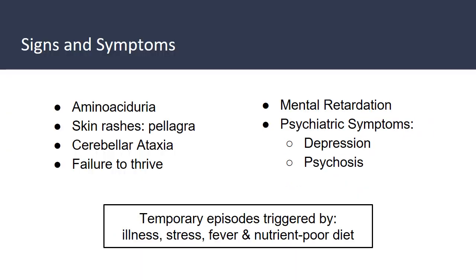Patients with Hartnup disease cannot absorb certain amino acids properly. This impedes the body's ability to produce protein and make vitamin B complex, triggering specific mental and physical symptoms. These include aminoaciduria, a photosensitive skin rash called pellagra distributed on the face, neck, hands, and legs, cerebellar ataxia, failure to thrive, mental retardation, and psychiatric symptoms such as depression or psychosis. Even patients without the genetic mutation may experience temporary episodes triggered by malabsorption due to illness, stress, fever, or a nutrient-poor diet.